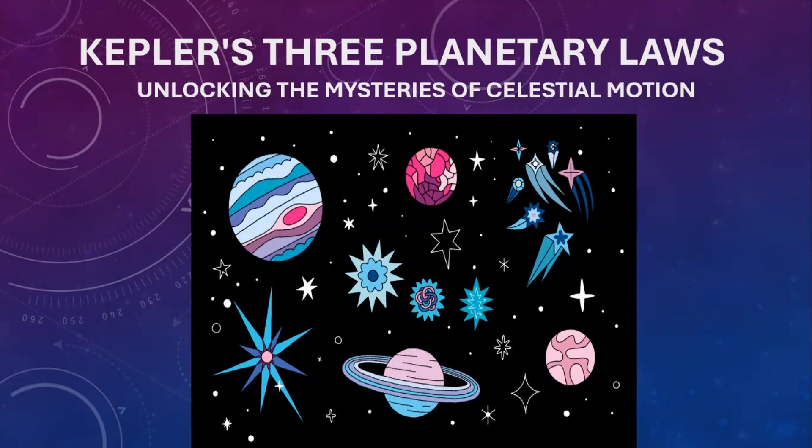Kepler's laws. Johannes Kepler, a German mathematician and astronomer in the 17th century, is renowned for his groundbreaking work in the field of astronomy. He is best known for three laws of planetary motion, which he formulated based on extensive observation and data analysis.